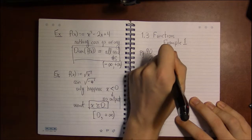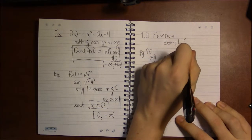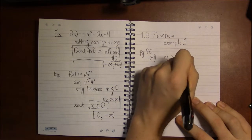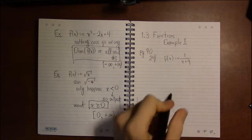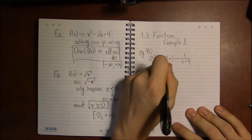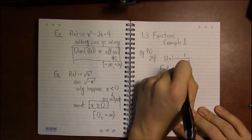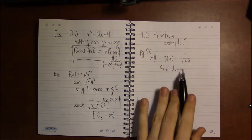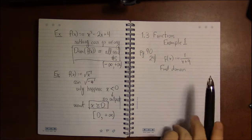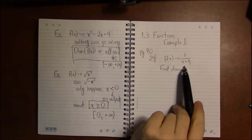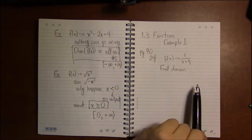Here our function is 1 over x plus 9. Now to find the domain, our task is to think about is it possible for us to take square roots of negative numbers or divide by 0.